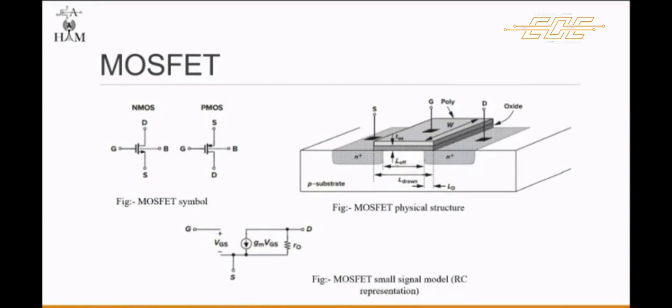The depletion region is populated by the bound negative charges which are associated with the acceptor atoms. When electrons are reached, a channel is developed. The positive voltage also attracts electrons from the n-plus source and drain regions.